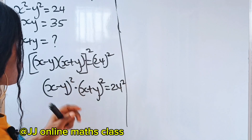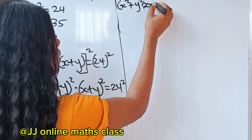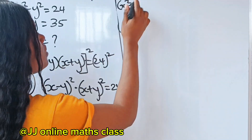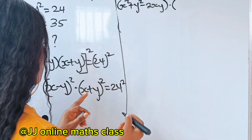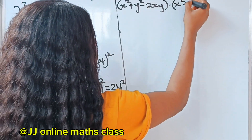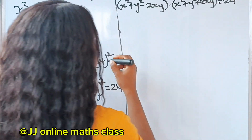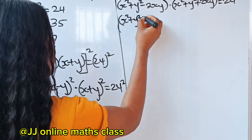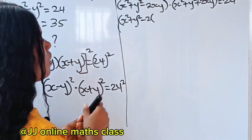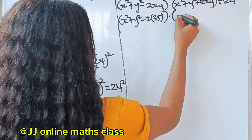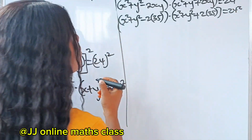Substituting, x minus y squared becomes x squared plus y squared minus 2xy, and x plus y squared becomes x squared plus y squared plus 2xy, all equal to 24 squared. Now we know xy equals 35, so we substitute: x squared plus y squared minus 2 times 35, multiplied by x squared plus y squared plus 2 times 35, equals 24 squared.